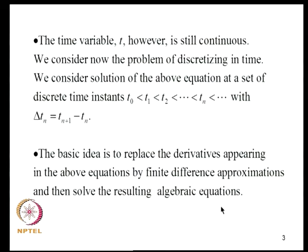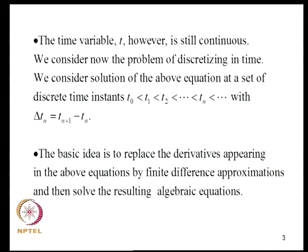We consider the problem of discretizing in time. We consider solution of this equation at a set of discrete time instances ordered as T0, T1, T2, TN, with delta TN being the step size TN plus 1 minus TN. The basic idea is to replace the derivatives appearing in the equation of motion by finite difference approximations and then solve the resulting algebraic equation.